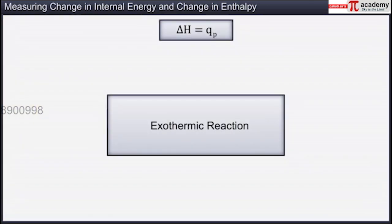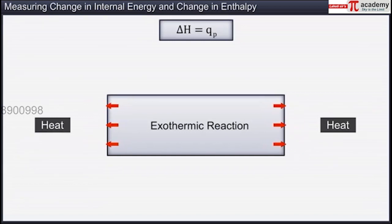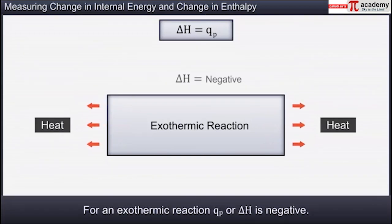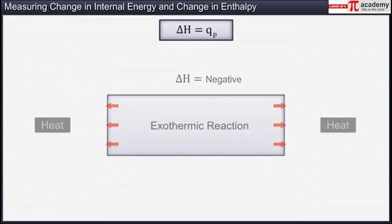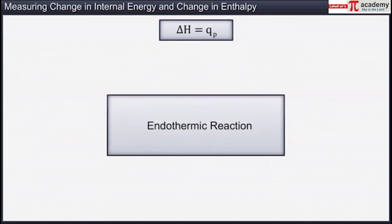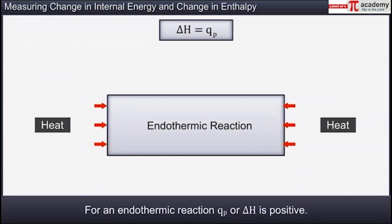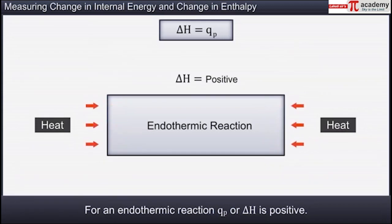In an exothermic reaction, heat is evolved and the system loses heat to the surroundings. Therefore, QP as well as enthalpy change delta H is negative. For an endothermic reaction, heat is absorbed by the system from the surroundings, and therefore QP as well as enthalpy change delta H will be positive.